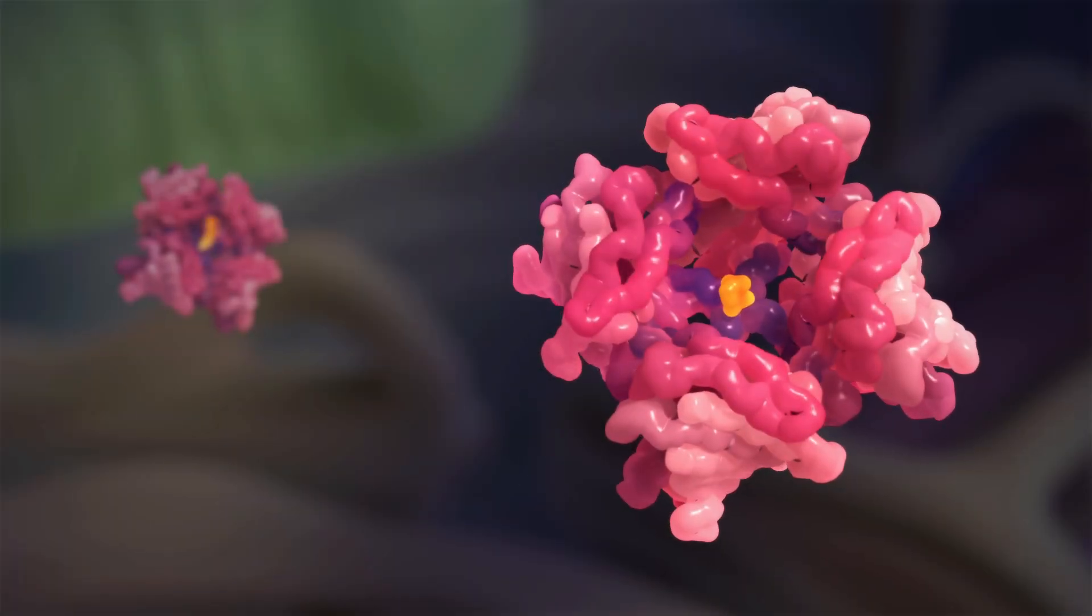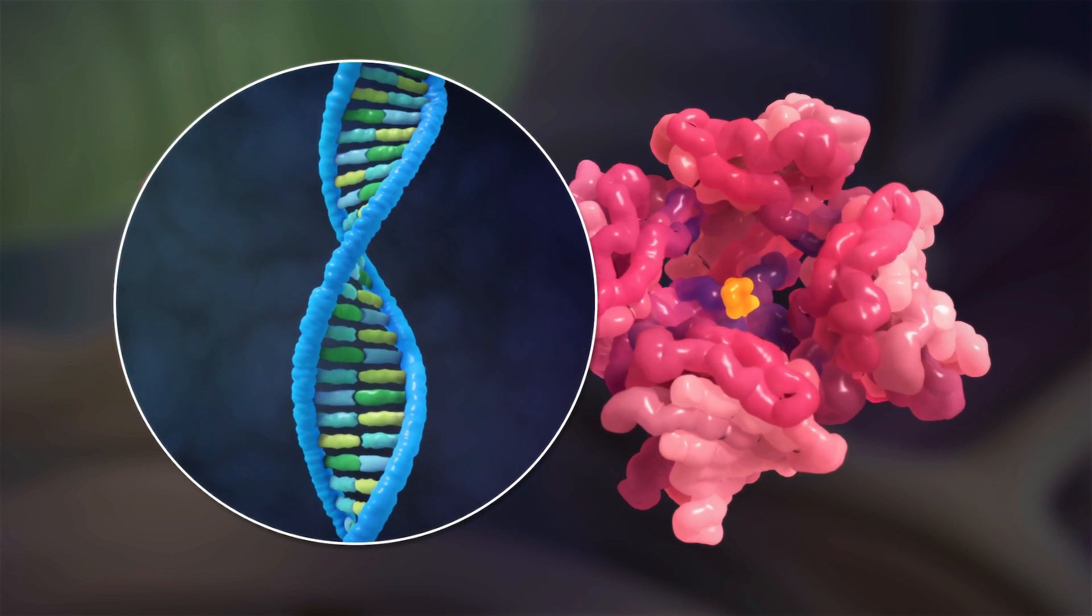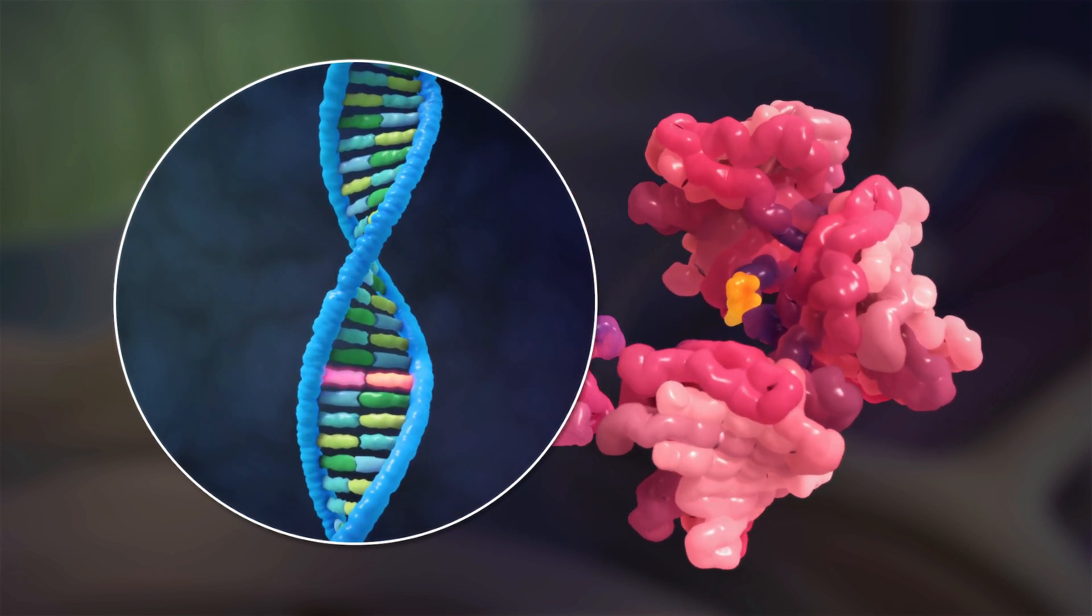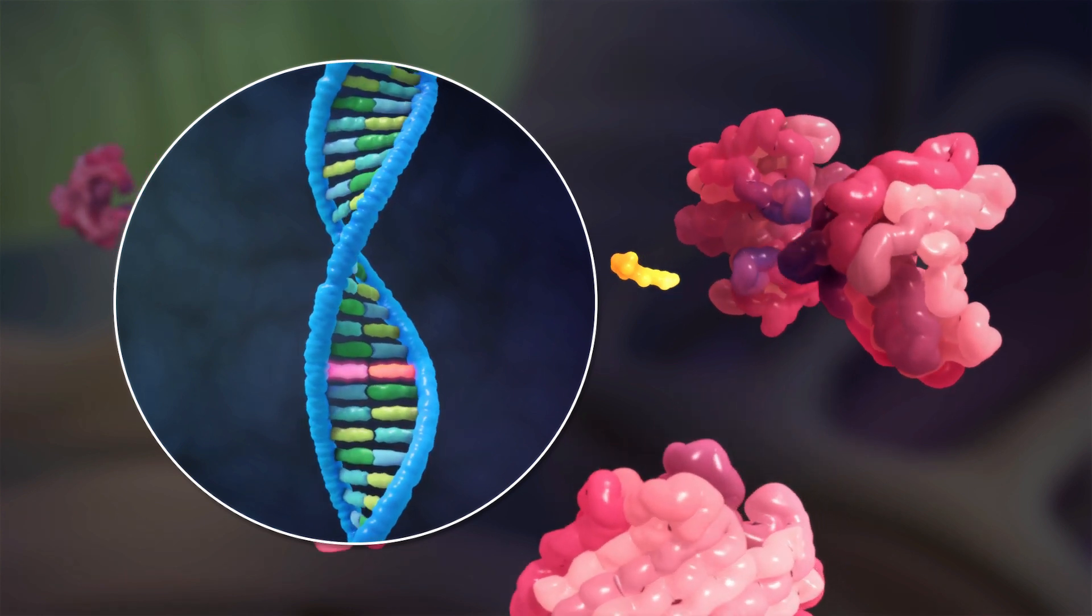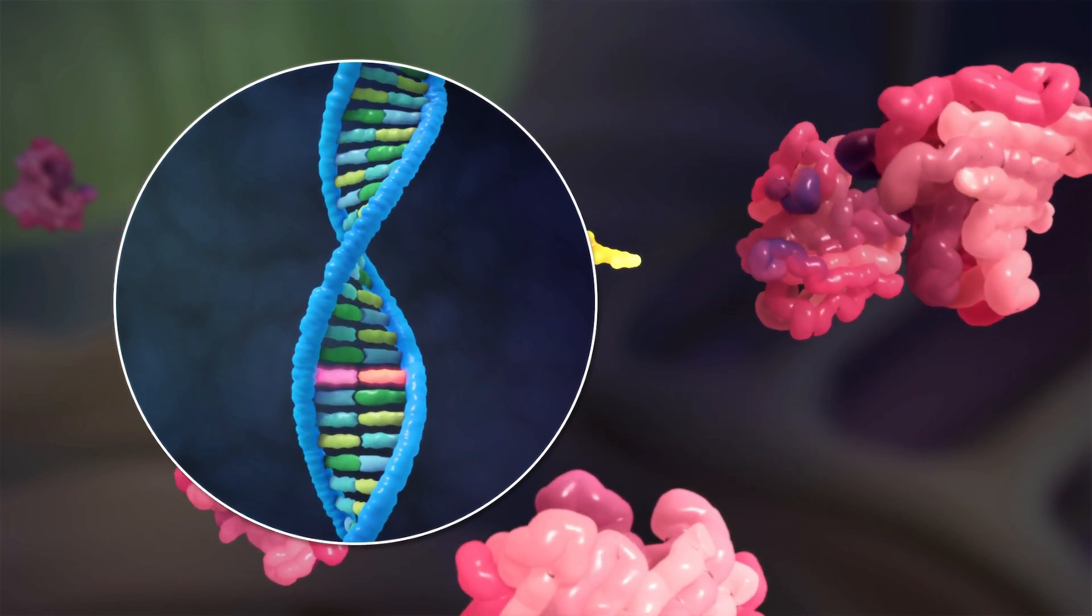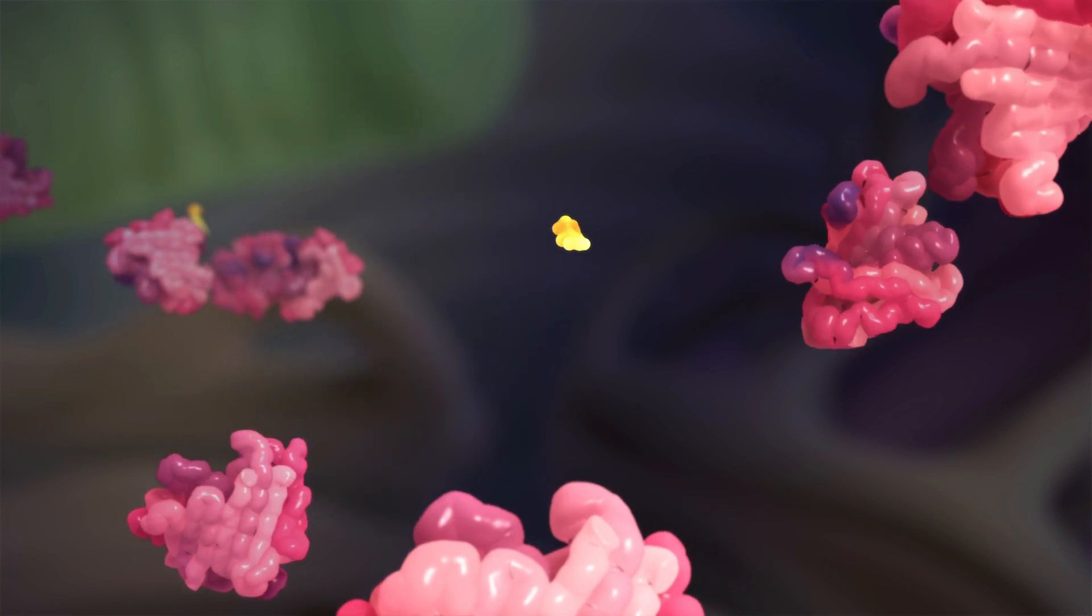In some cases, this is a result of inheriting a mutation in the TTR gene, which gives rise to TTR proteins that don't fit well together. This is known as hereditary ATTR amyloidosis.